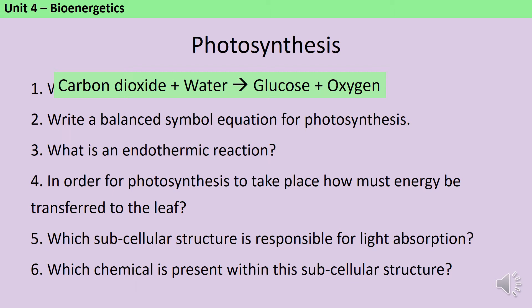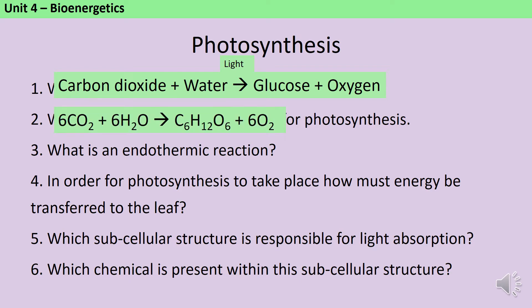Also in the biology exams we write light on top of the arrow. The balanced symbol equation for photosynthesis is six moles of carbon dioxide reacting with six moles of water to make one mole of glucose and six moles of oxygen.